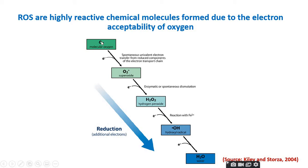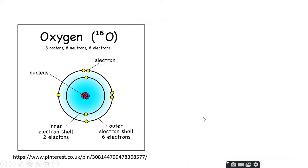In the first step, when oxygen accepts just one electron, it produces superoxide. If it is loaded by another electron, it forms hydrogen peroxide, and if loaded by yet another electron, it forms hydroxyl radicals. This is how reactive oxygen species are formed in the cell.